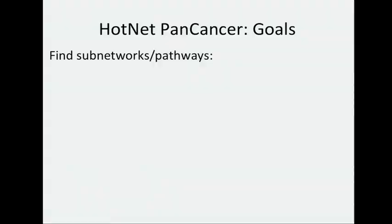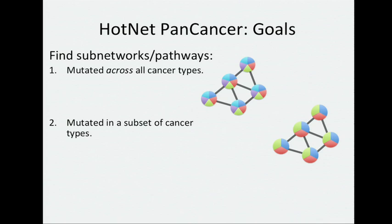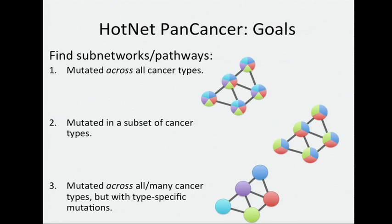In this study, what we wanted to do was apply HotNet in the pan-cancer setting, to go across multiple cancer types. The idea was that what we would like to find is perhaps universal subnetworks that were mutated across all cancer types, or perhaps ones that were mutated in only a subset of cancer types, or maybe even cases where the subnetwork itself is mutated across all cancer types, but the individual genes within that subnetwork are mutated with some cancer-type-specific biases. We didn't know which, if any, of these things would arise, so we decided to go and look.